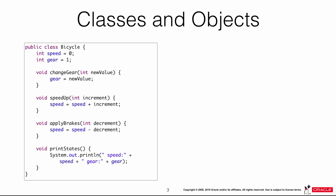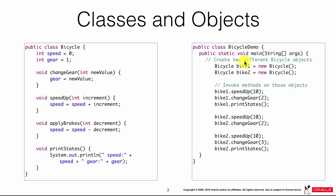For example, I have a class definition here of a bicycle. You can see that we have two attributes: the speed attribute, an integer, and the gear, also an integer. Then we have methods: change gear, speed up, apply the brakes, and print the state of the bicycle. This is the class definition of a bicycle. To create an instance, we use the new keyword — for example, `bicycle bike1 = new bicycle()`.